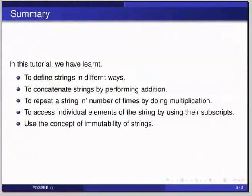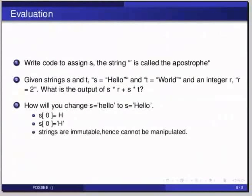Here are some self-assessment questions. First, write code to assign s the string that contains an apostrophe. Second, given strings s = 'hello' and t = 'world', and integer r = 2, what is the output of s * r + t * r? Third, how will you change s = 'hello' to s = 'Hello' with capital H? The options are: s[0] = 'h', s[0] = 'H', or strings are immutable hence cannot be manipulated.